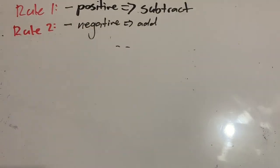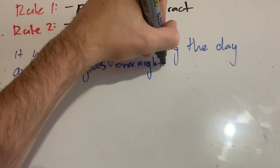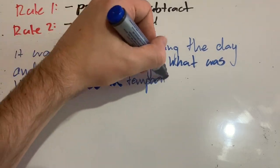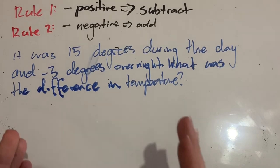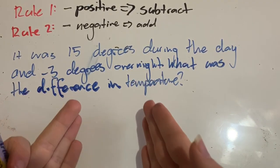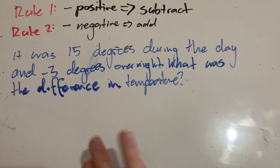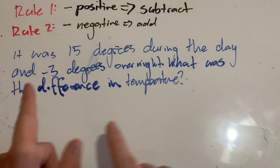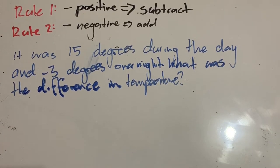Let's try a word problem. It was 15 degrees during the day and negative three degrees overnight. What was the difference in temperature? So I need to work out the difference. And when we talk about difference, we are meaning subtraction. We're always talking about minus or subtraction. When we see difference, we're working out what's in between the two numbers.